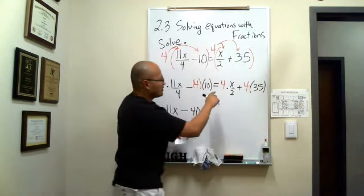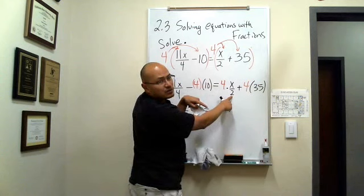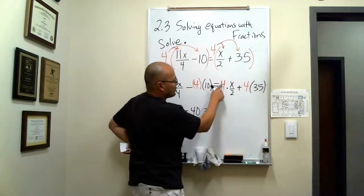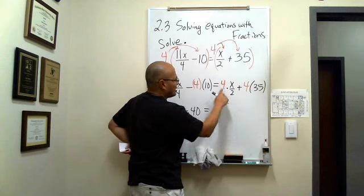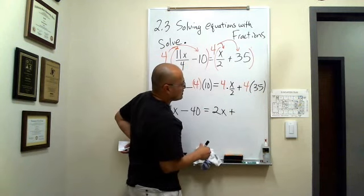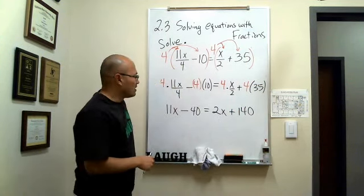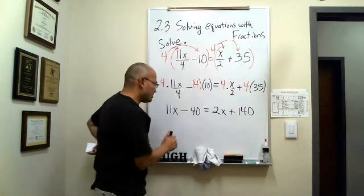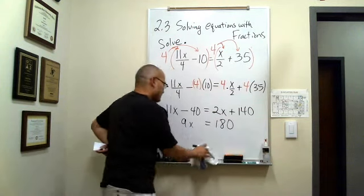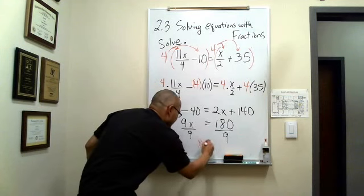That equals: on the right side we have multiplication, so we reduce the factors of 4 and 2. 4 over 2 reduces to 2 over 1, which is just 2. So this becomes 2 times x. Then plus 4 times 35, which is 140. From here you should get 9x is equal to 180. Divide both sides by 9 and you get the final answer: x equals 20.